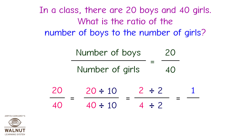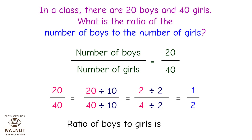We divide the numerator and denominator by 2 and we get 1 upon 2. Can we divide this fraction further? So the ratio of the number of boys to the number of girls is 1 is to 2, and that's the answer.